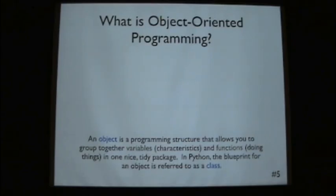Okay, so an object is a programming structure that allows you to group together variables or characteristics and functions, doing things, into one nice tidy package. So instead of procedural programming where you have to kind of independently define our data and then pass that into a bunch of functions, this allows us to group everything together and it's a very useful, more efficient way of programming.